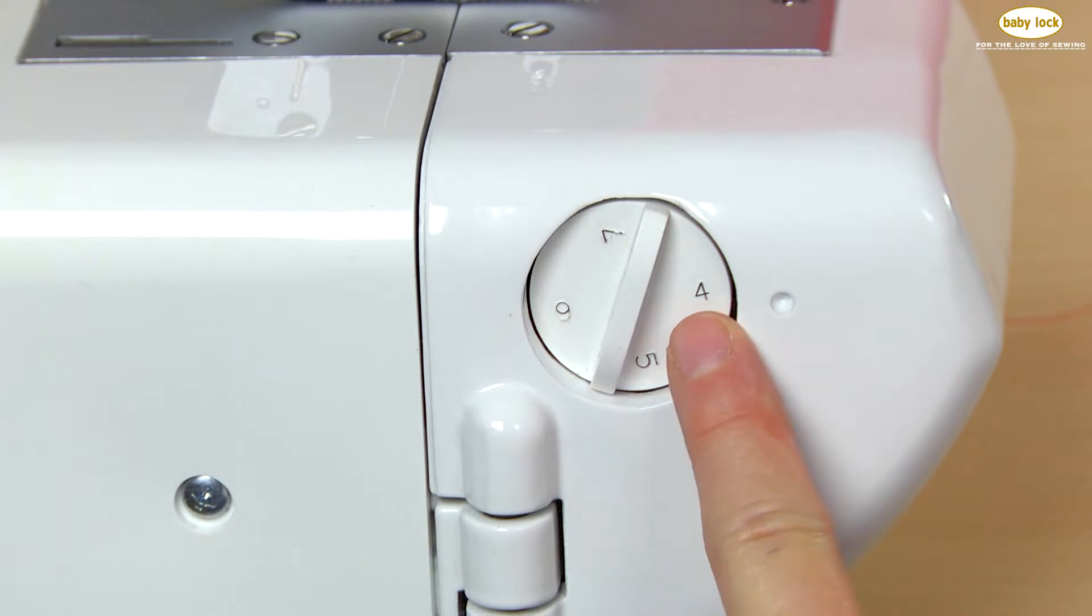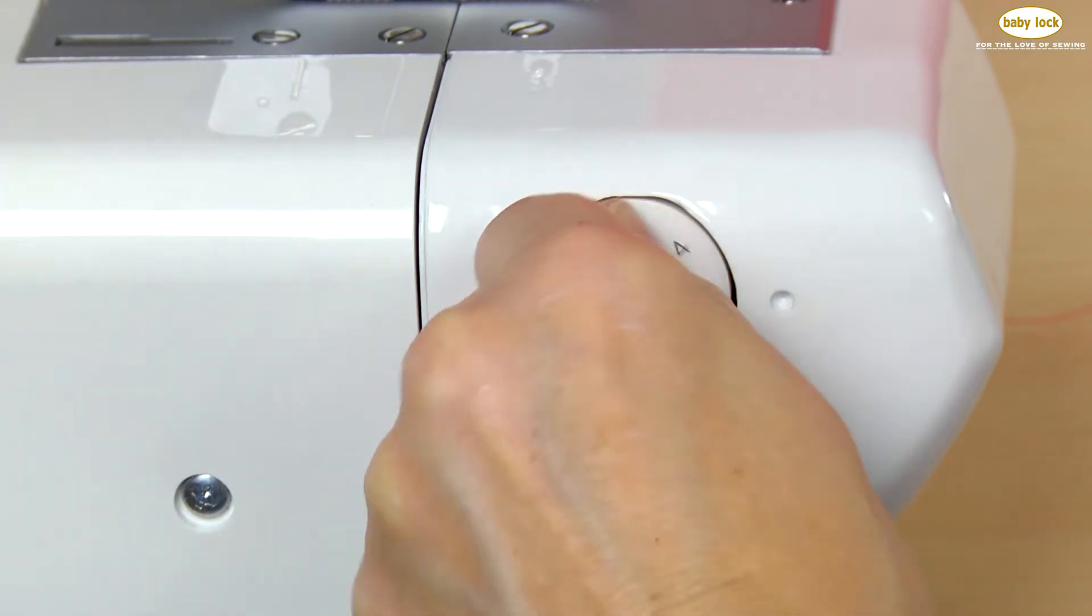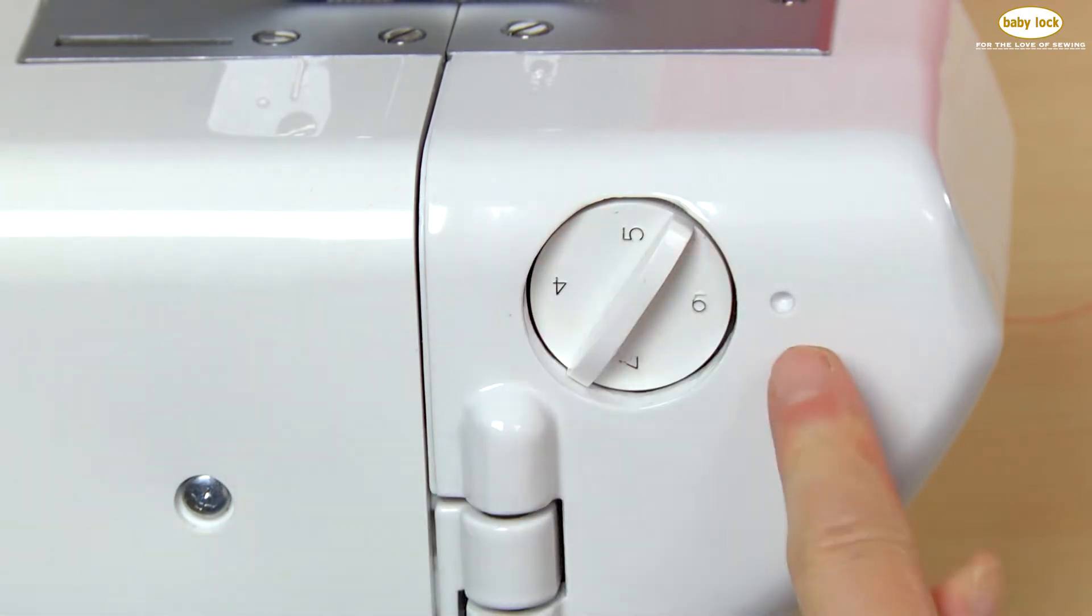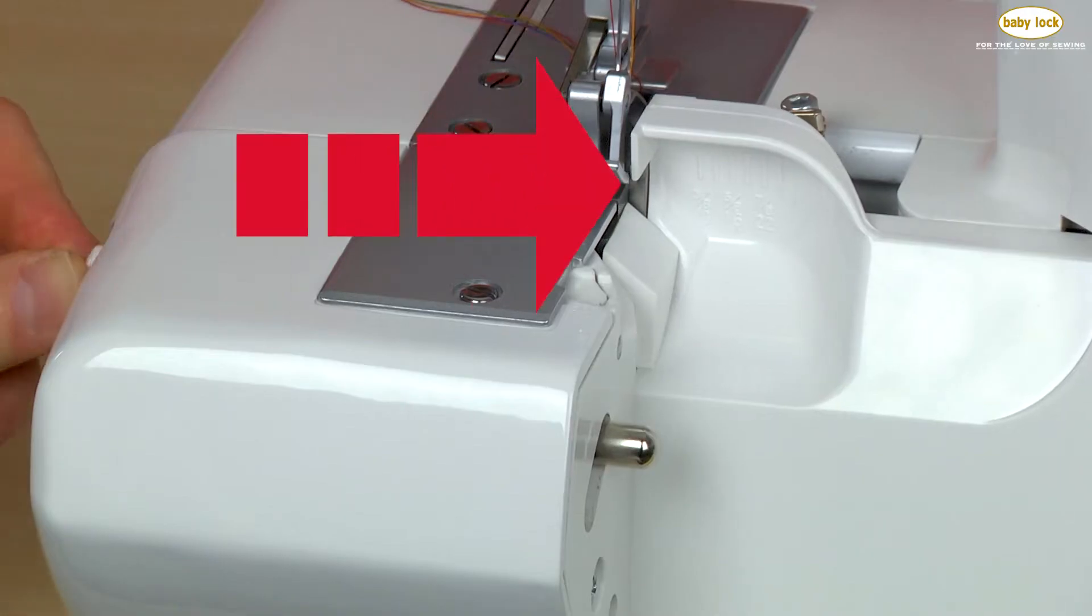On the left-hand side of the machine, you'll notice a dial with settings from four to seven. What this does is position the cutting blade further away from the needles.